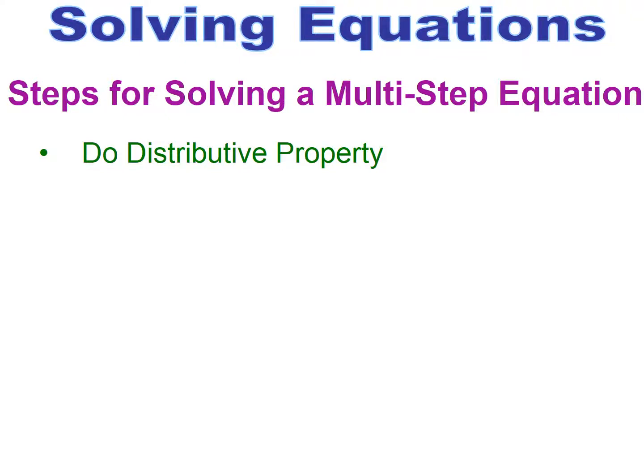We're now working with multi-step equations. When dealing with multi-step equations, you always want to remove the parentheses first, so you're going to do the distributive property first. If you see a number on the outside of parentheses, you want to do the distributive property — take the number on the outside and multiply it to everything inside, and that will remove the parentheses.